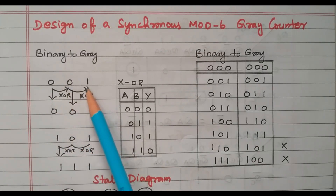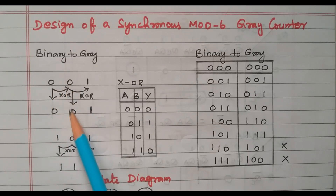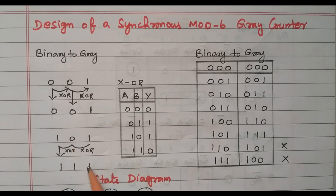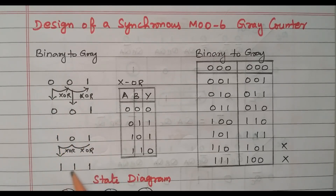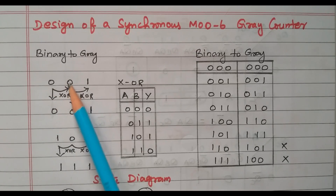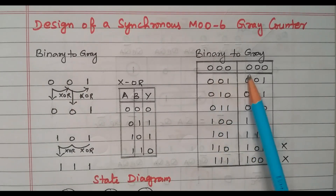The first digit is written as-is; the second digit is the XOR of the first and second binary bits; the third is the XOR of the second and third. For example, binary 101: write 1, then 1 XOR 0 = 1, then 0 XOR 1 = 1. For 001, both first bits same gives 0, second and third different gives 1, so gray is 001.